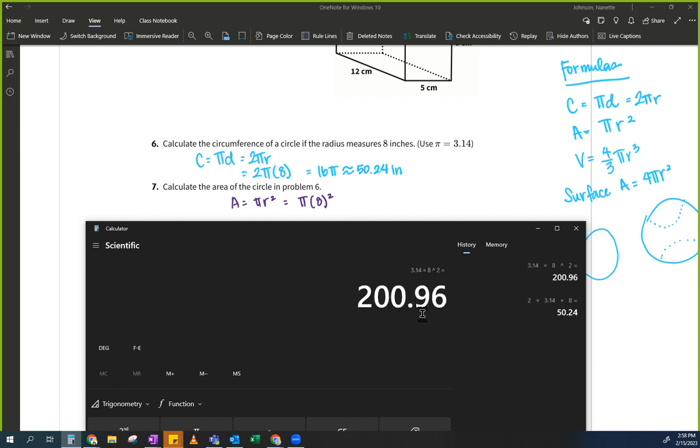So there's your answer. Which makes sense because this is about 64, 60 ish times three gives me about 180. So it's a little bit more because we have a little bit more here and here. So again, approximately 200.96 inches squared.